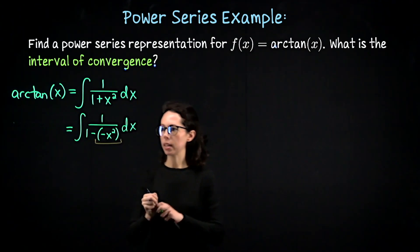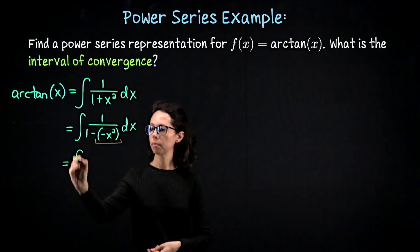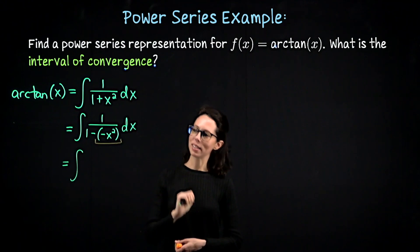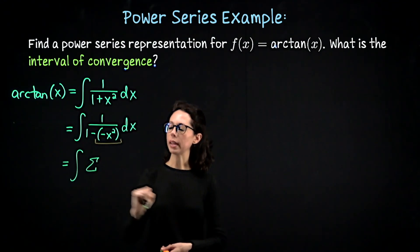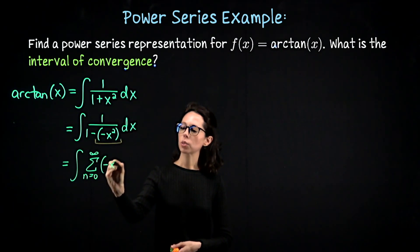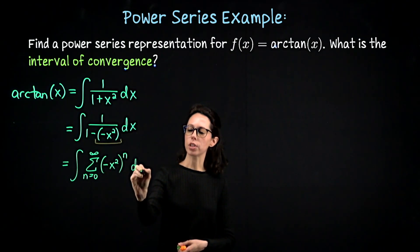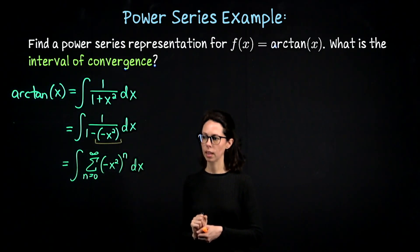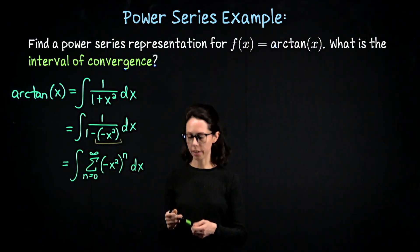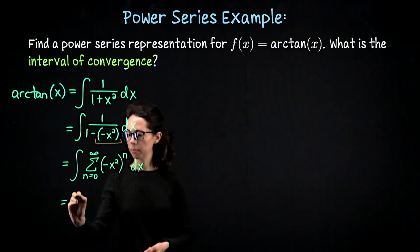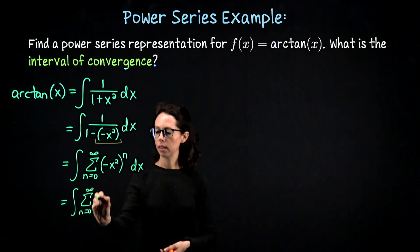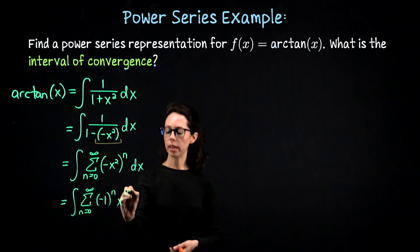I'm going to take this expression now and bring in a power series. We haven't antidifferentiated anything yet, so the integral is still in front. This expression 1 over 1 minus negative x squared we can replace with the sum from n equals 0 to infinity of negative x squared to the n, and we still have to antidifferentiate. Let me rewrite this as the antiderivative of the sum from n equals 0 to infinity of negative 1 to the n times x to the 2n dx.